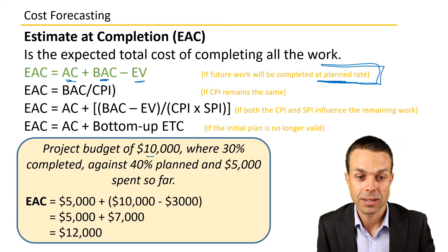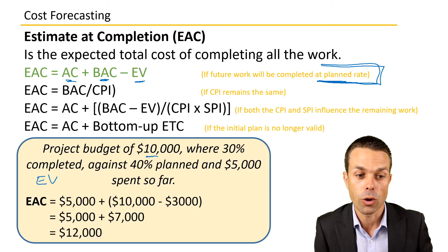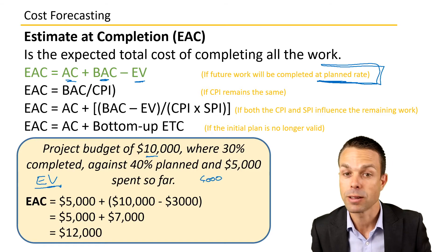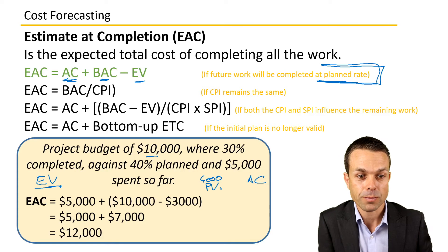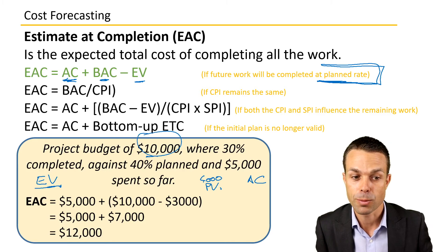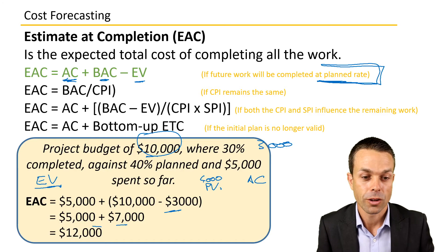So remember: budget at completion is $10,000; 30% completed is our earned value — $3,000; 40% is our planned value — $4,000; and $5,000 is our actual cost. Plugging in: AC ($5,000) plus BAC minus EV ($10,000 − $3,000 = $7,000). So $5,000 plus $7,000 equals $12,000.